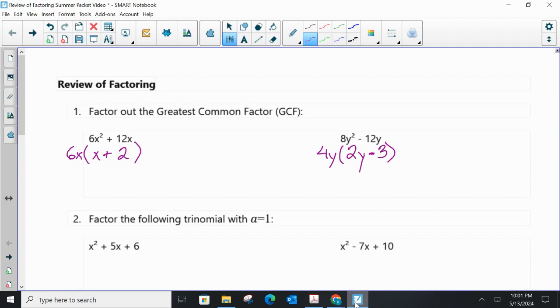For number 2, we're going to factor the following trinomial where a equals 1. Remember that the form of a trinomial that we can factor using this method is ax² + bx + c. Basically what we're going to do is we are going to come up with the two factors of c that add up to b. So the two numbers must multiply to letter c but they must add to b.